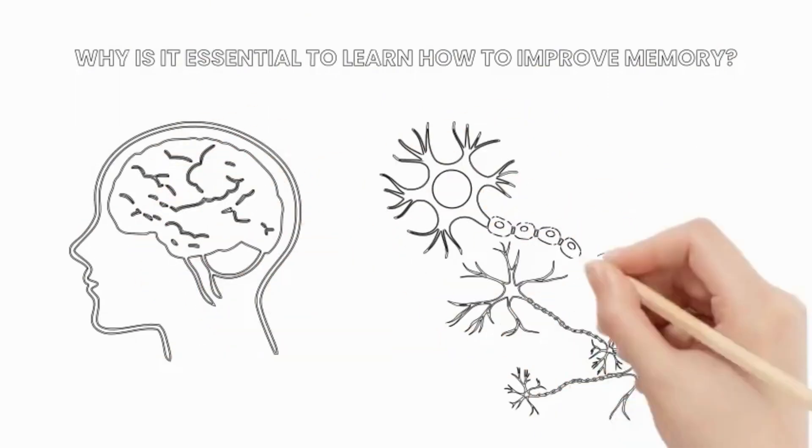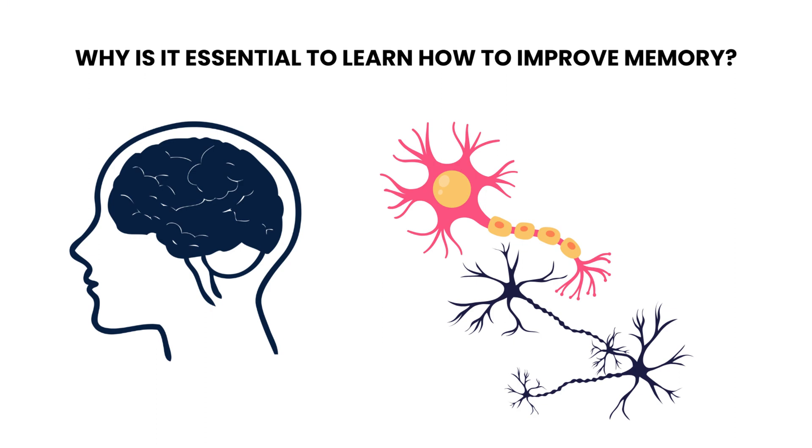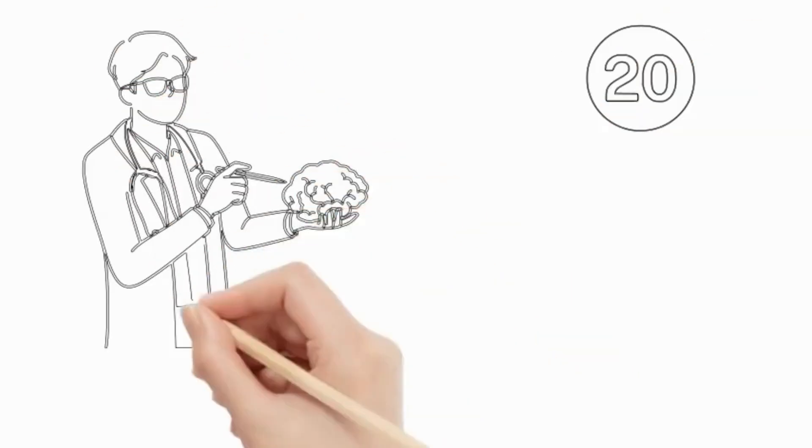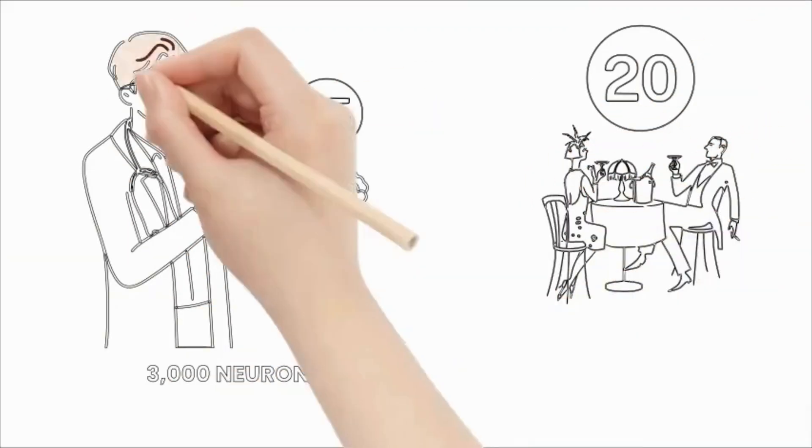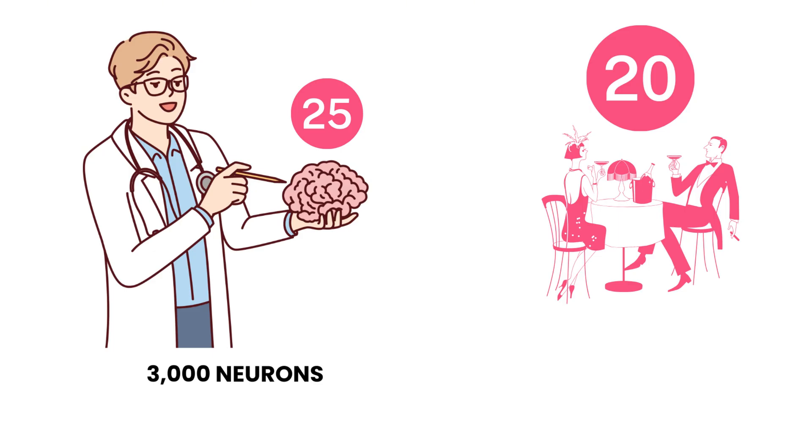Why is it essential to learn how to improve memory? The adult human brain comprises approximately 100 billion neurons, which are responsible for quickly processing and storing information. As we reach our 20s, these neurons begin to decline, with around 3,000 neurons being lost each day after the age of 25.